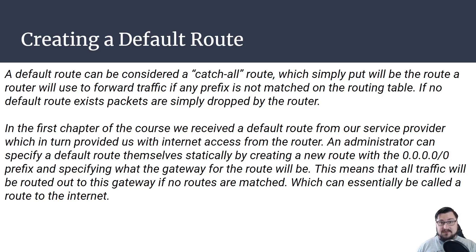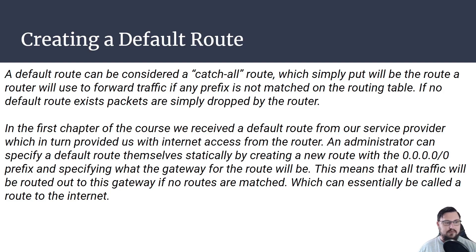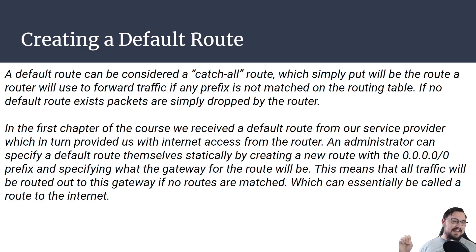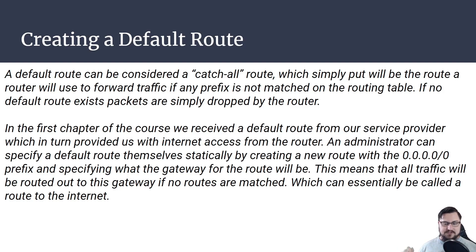Now we're looking at creating a default route — us as administrators specifying it ourselves rather than learning it through a DHCP client or PPPoE. A default route can be considered a catch-all route: the router will use it to forward traffic if any prefix is not matched in the routing table. That 0.0.0.0/0 route — if no routes exist for the destination, it will take that path out to the next specified gateway. It then becomes that gateway's problem to find the final destination. If no route exists at all, the router will discard the traffic.